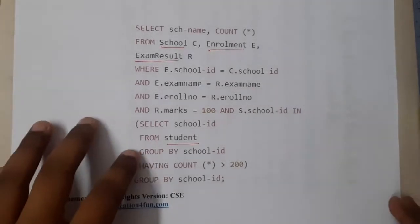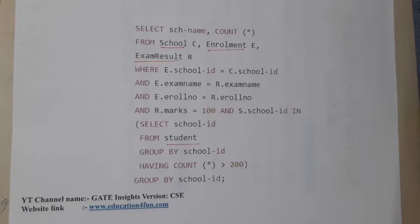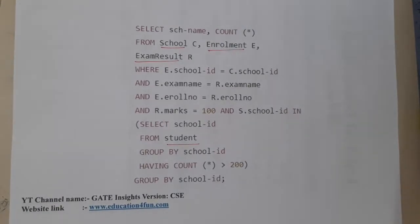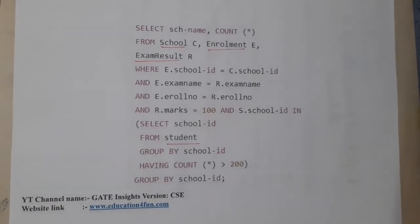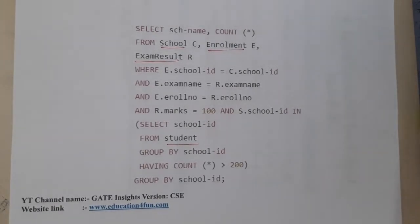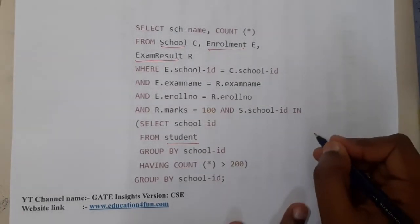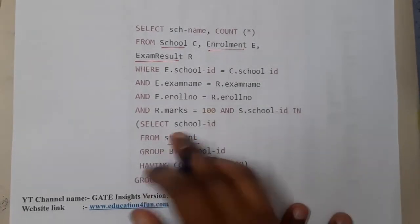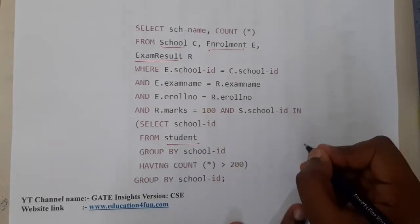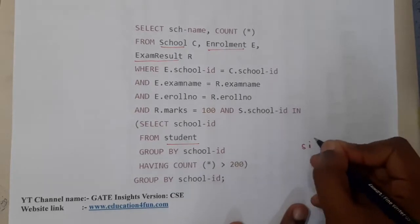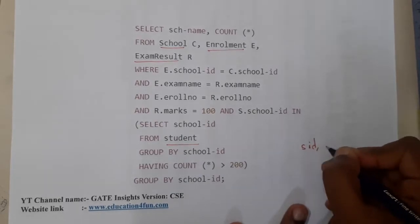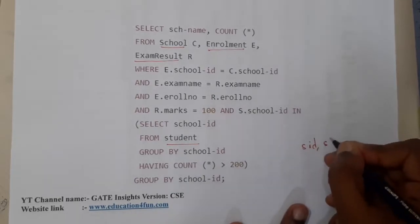Let us try to understand it faster. What exactly are they trying to do? In the school table, we have a school ID.